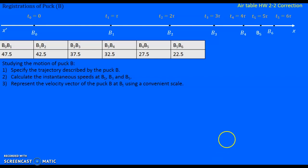Registrations of Puck B. Studying the motion of Puck B, the successive positions are given and the distances B1B2, B2B3, B3B4, B4B5, B5B6 are given.